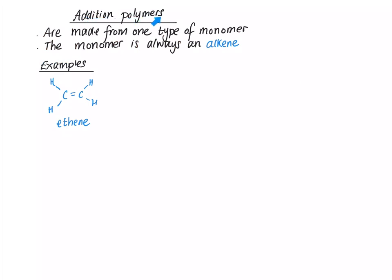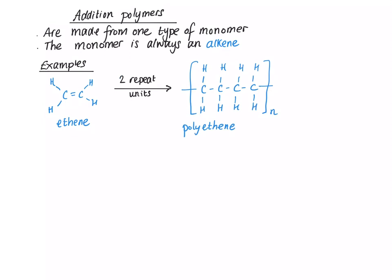Addition polymers are polymers that are made from only one type of monomer and the monomer is always an alkene. For example, if we take ethene and turn it into polyethene, the ethene units line up and bonds form between the carbon atoms. So here we show two repeat units — what you would see if you zoomed in on a part of the polymer and looked at only two monomers linked together.